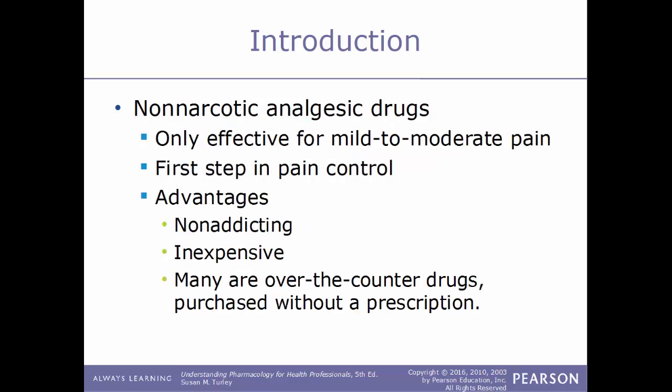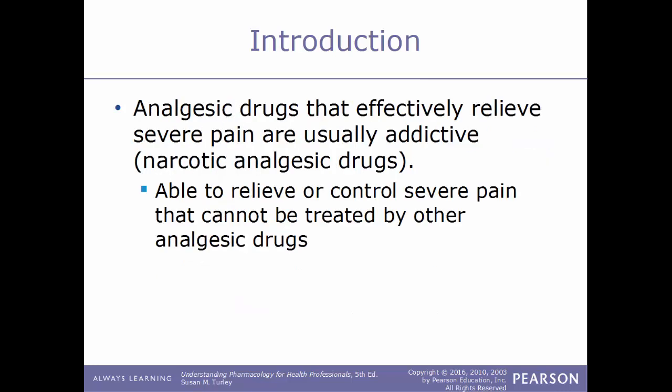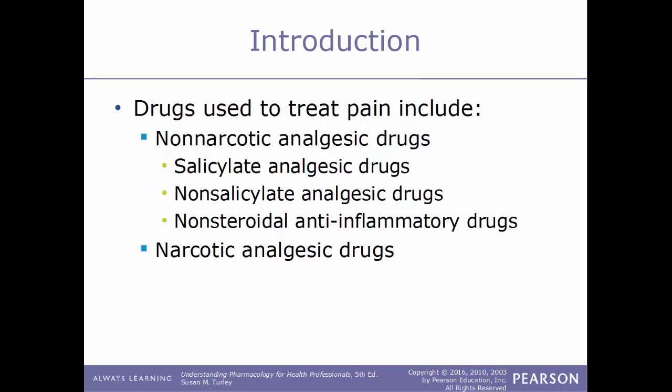The first type of analgesic drug we'll talk about are non-narcotic analgesic drugs. These are only effective for mild to moderate pain as the very first step in pain control. Advantages include: they are not addicting, they are inexpensive, and many are over-the-counter. Analgesic drugs that effectively relieve severe pain are usually addictive, as they are usually narcotics, used to relieve or control severe pain that can't be treated by other analgesics.